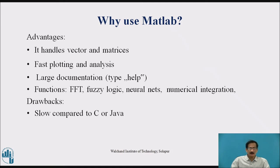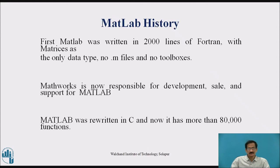A drawback of MATLAB is that it is slow compared to C or Java. MATLAB history: the first MATLAB was written in 2000 lines of Fortran, with matrices as the only data type, no .m files or script files, and no toolboxes. Mathworks is now responsible for development, sale, and support for MATLAB. MATLAB was rewritten in C and now has more than 80,000 functions.